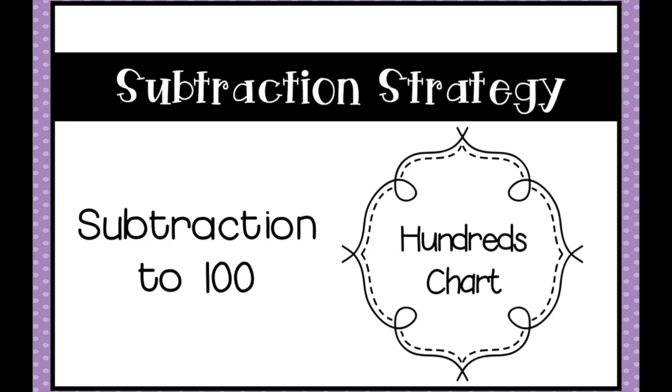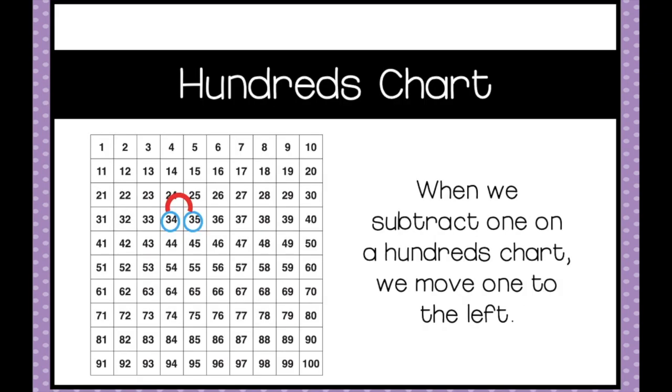Let's look at subtraction to 100 using a hundreds chart. When we subtract on a hundreds chart, we move 1 to the left if we're subtracting 1. So here you can see we're at 35. We subtract 1 by moving 1 to the left, and you'll notice that the numbers are getting smaller.